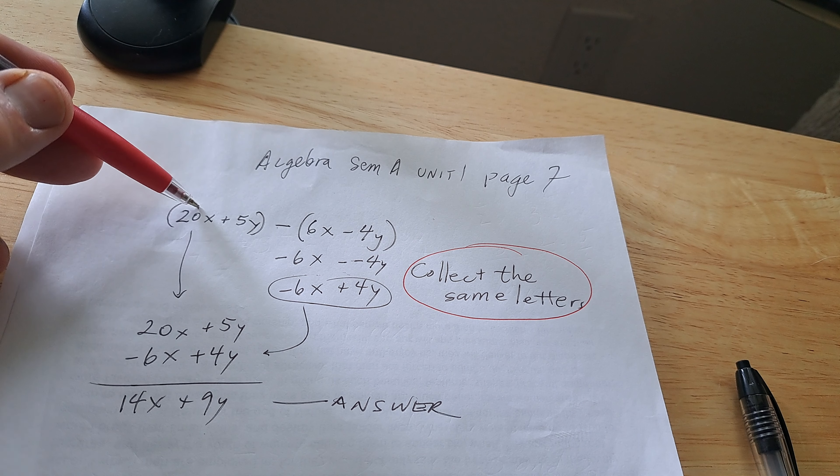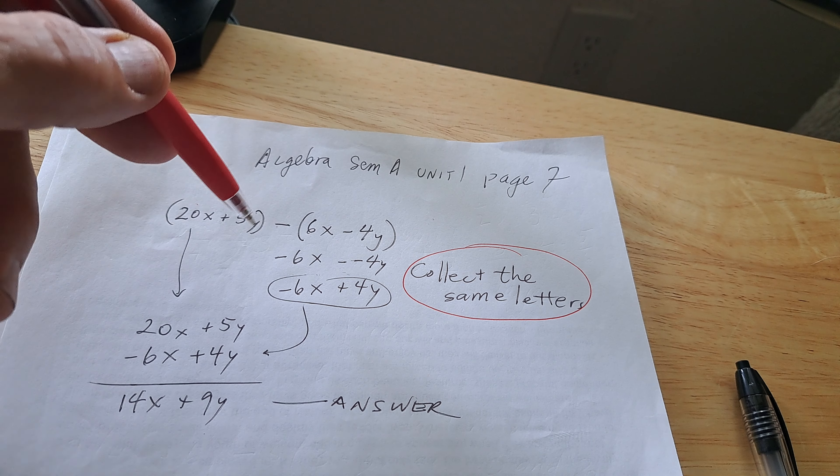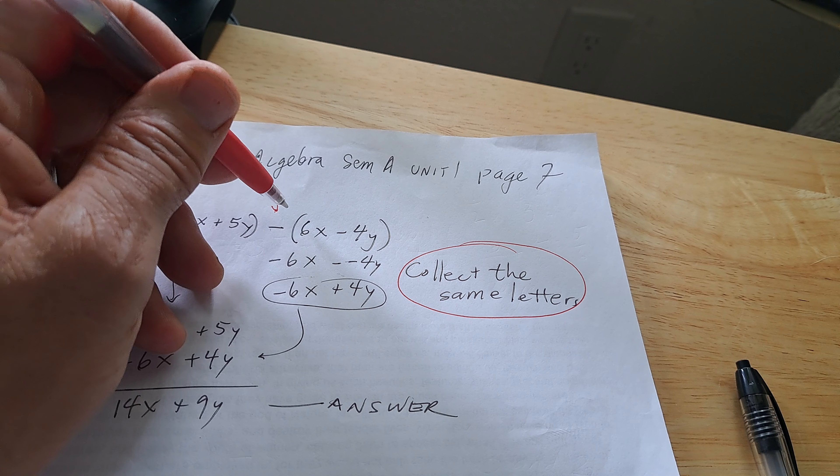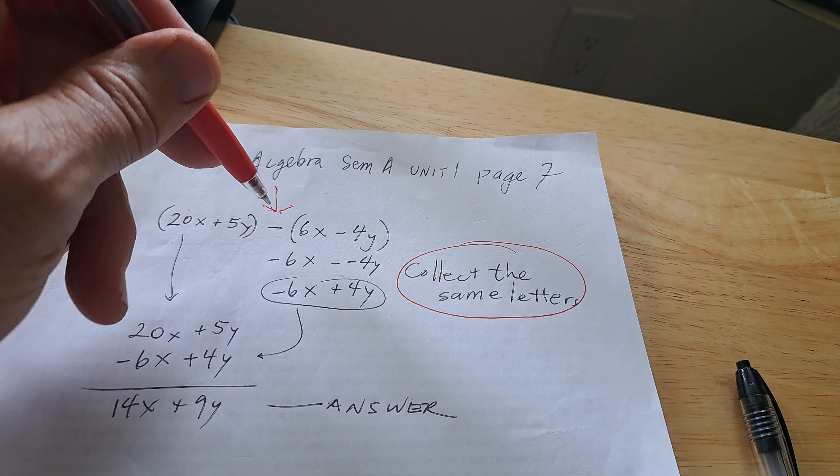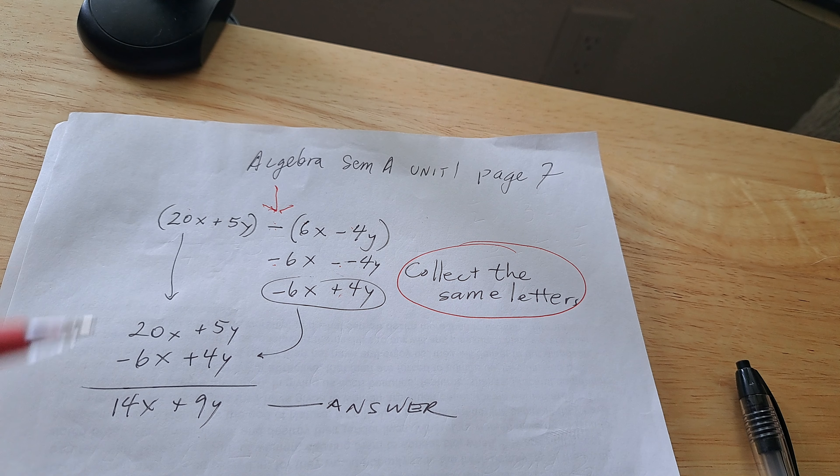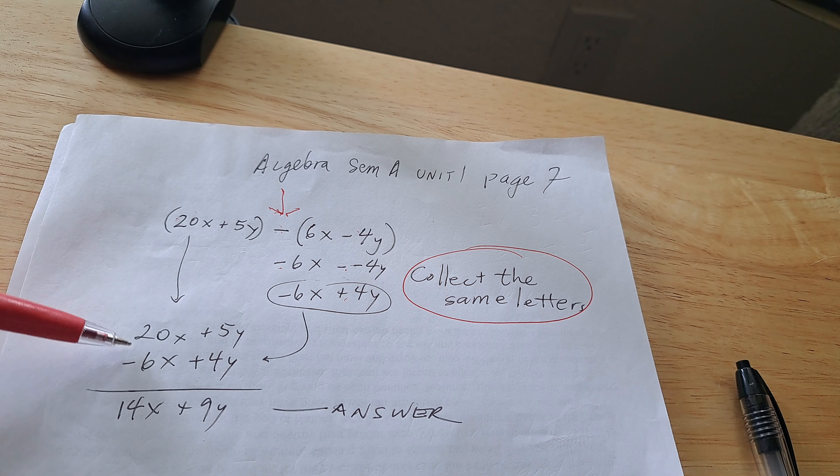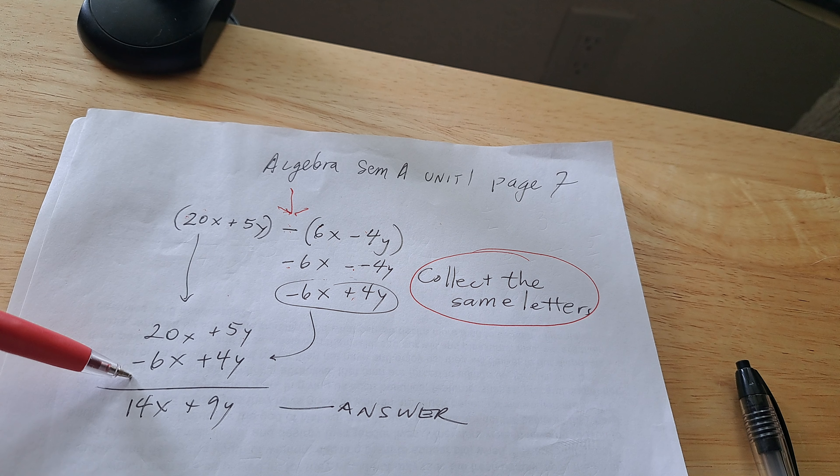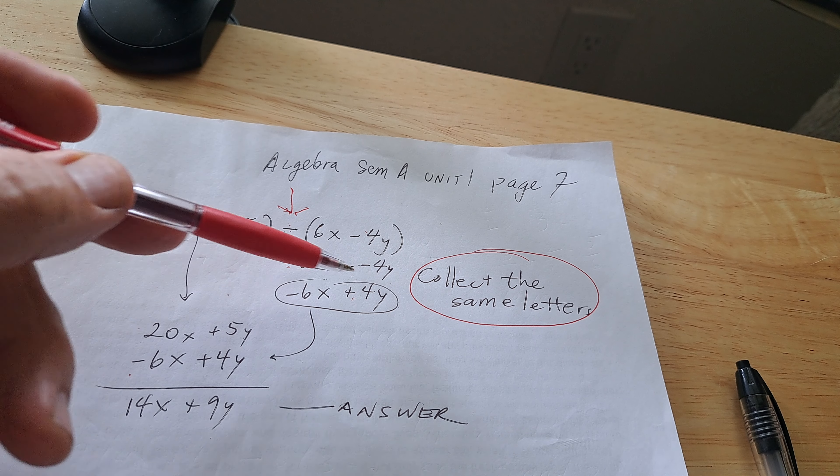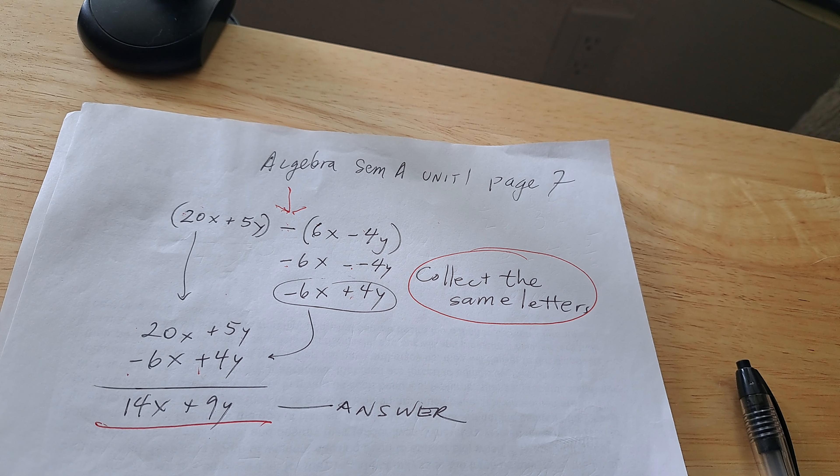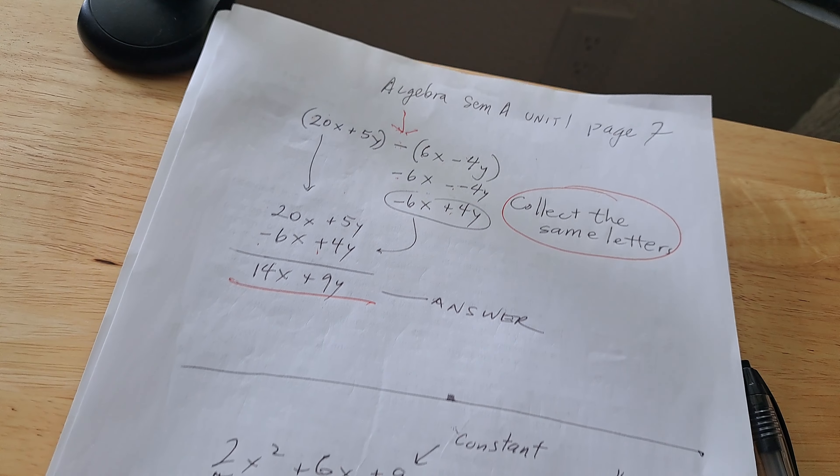Next, this is pretty straightforward. You want to collect the same letters. I see the X is here, I see the X is here. Here's Y and Y. The tricky part is right here. See that negative or it's a subtracting? What I want you to do is a negative of a positive makes a negative, a negative of a negative makes a positive. That's why we have negative makes a positive. We take all of this and we put it underneath. So I rewrote this, 20X plus 5Y. I move the negative 6X underneath the 20, and the Y goes under the Y. Let's add them up, and there's our answer.